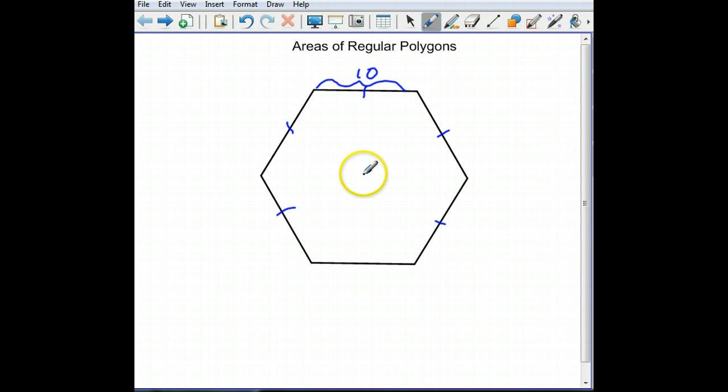If I go from the center point and draw a radius to a corner and a radius to that corner, I've created a triangle. I've actually created an equilateral triangle because if I did that to every corner, I would break this down into one, two, three, four, five, six triangles all the way around this 360 degrees. So if I divide 360 by six, that means each one of these angles is 60.